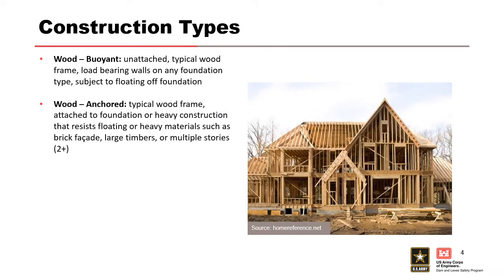We also have typical wood frame structures, split into two categories: wood buoyant and wood anchored. Wood buoyant means there's nothing bolting the structure to the foundation. In rural Appalachia, for example, most wood frame structures are probably not bolted to their foundations. Wood anchored structures are more common in seismic areas or tornado alley, where homes are typically anchored to the foundation. You can look up building codes for the area to help answer this question.